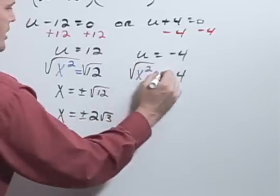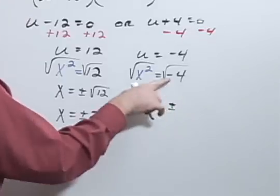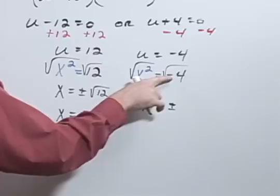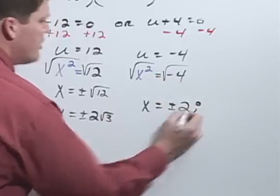Or, again, I could take the square root of both sides from x squared equal to negative 4. x equals positive negative the square root of negative 4. Remember the negative, so it's going to have an i, and then the square root of 4 is 2, so 2i.